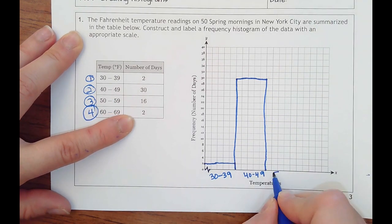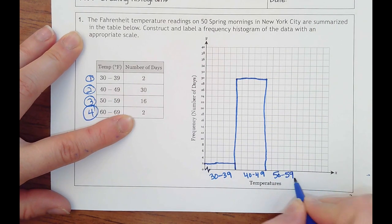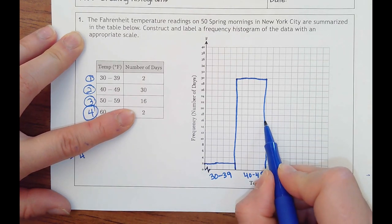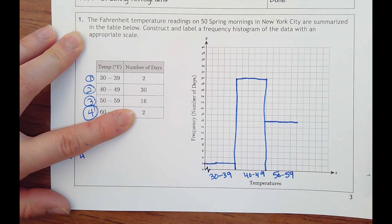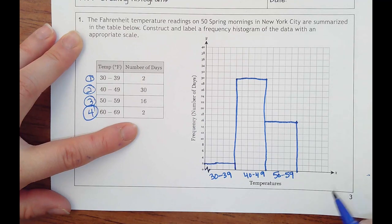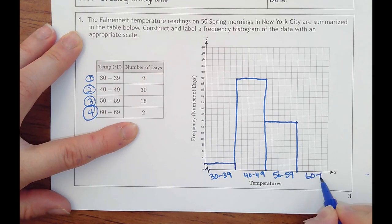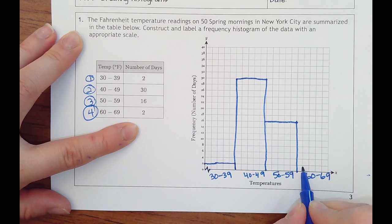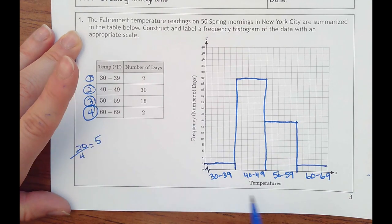Next one, 50 to 59 degrees that happened for 16 days. And then 60 to 69 degrees that only happened for two days again. So it never got too cold or too warm.